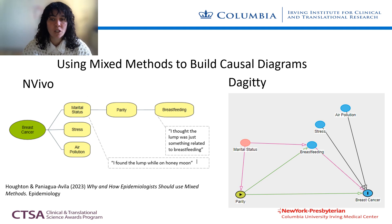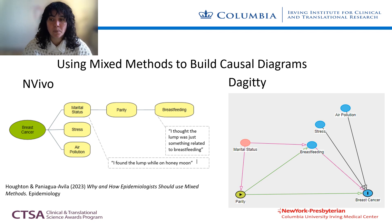In this example, we show a sequential exploratory design that collects qualitative data from women with early onset breast cancer on the left to build a causal diagram to test with quantitative methods on the right. Qualitative analysis identifies parent codes such as air pollution, stress, and marital status as possible causes of cancer that women mentioned.